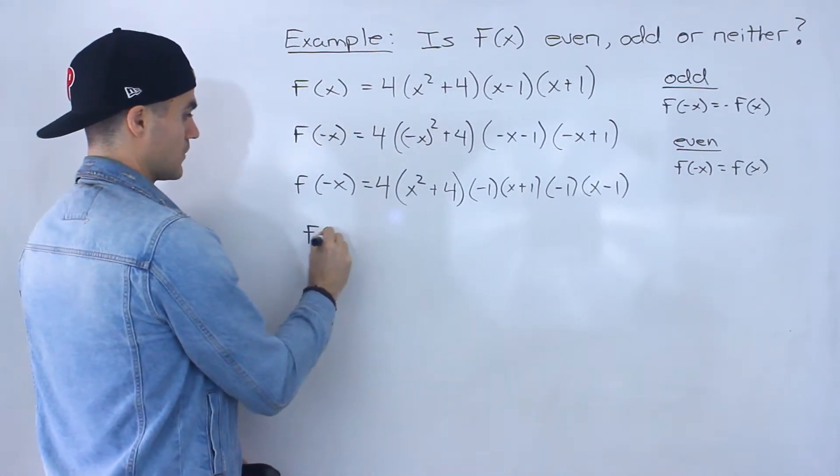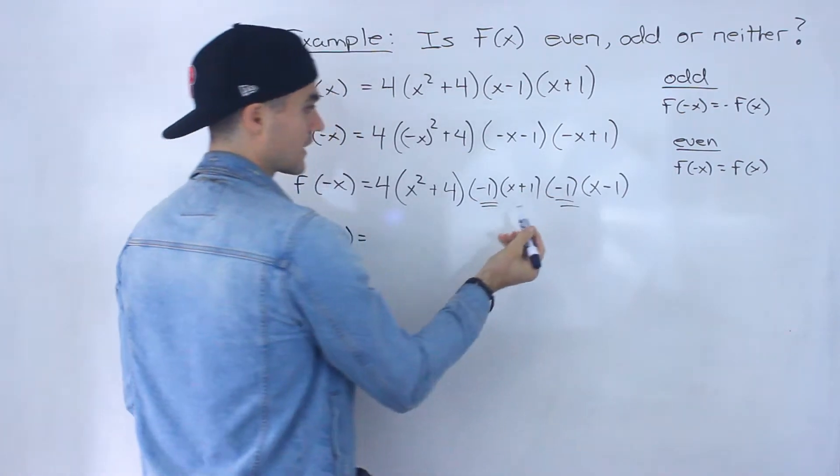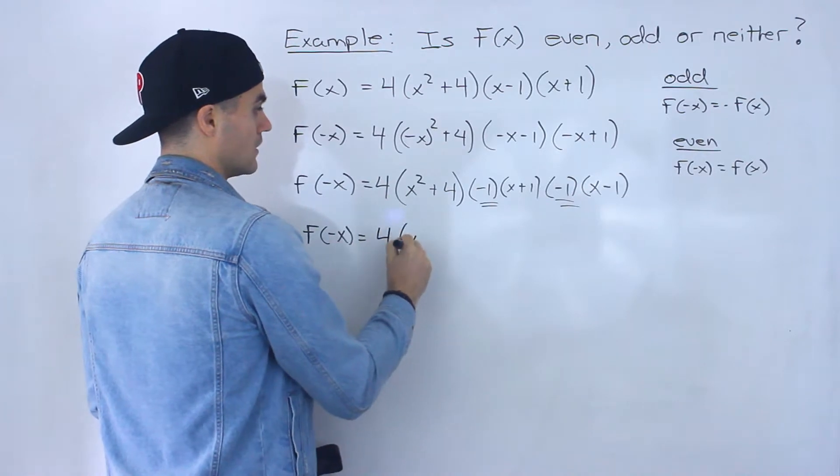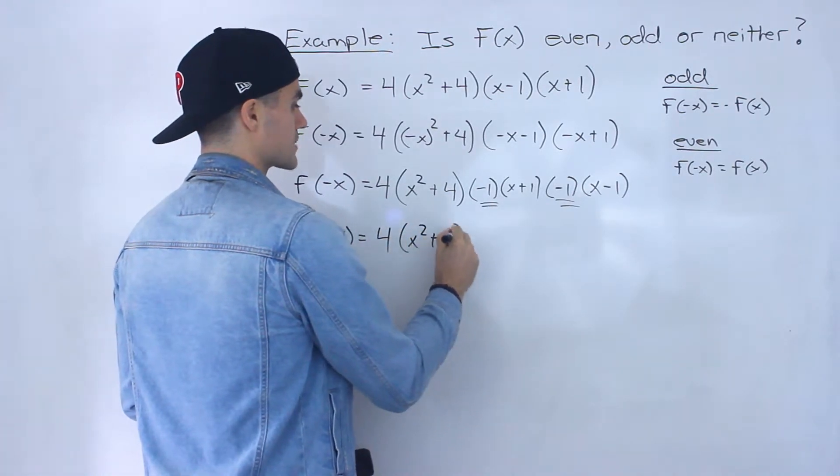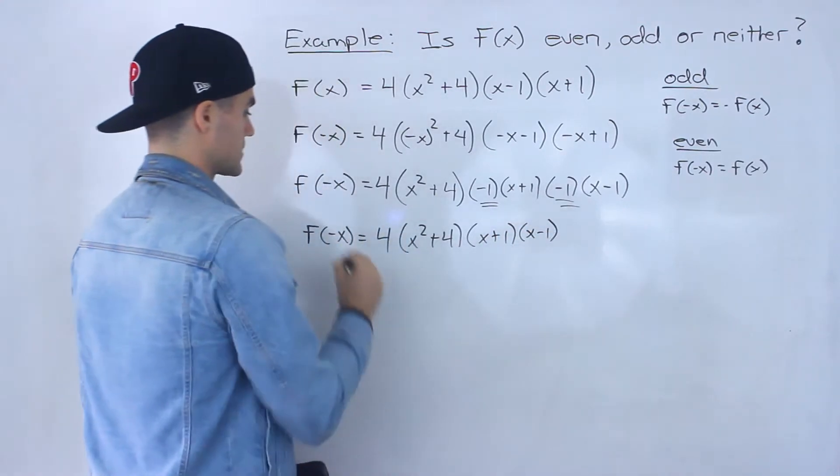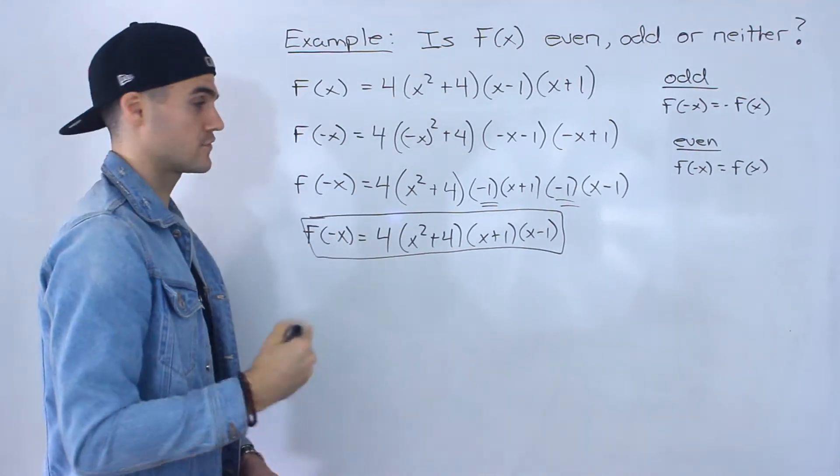And so now what you want to do is you want to take this negative 1, multiply with this negative 1. That's positive 1 times 4. That just gives us positive 4. And then rewrite these factors: x squared plus 4, x plus 1, x minus 1. So that is the simplified expression for f of negative x.